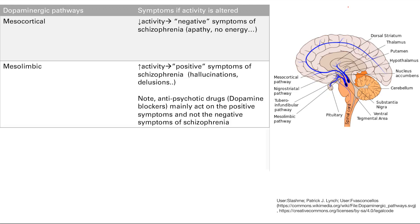The mesolimbic pathway, on the other hand, involves the limbic system — the amygdala, the hippocampus. If you increase the activity here, with increased dopamine activity, you're going to get the positive symptoms of schizophrenia: hallucinations and delusions. The limbic system governs emotions, and when the amygdala goes too crazy, you get hallucinations — that's the way to think about it.